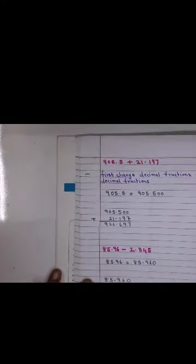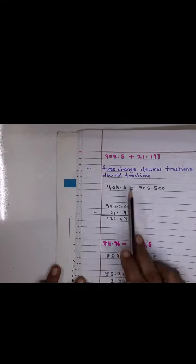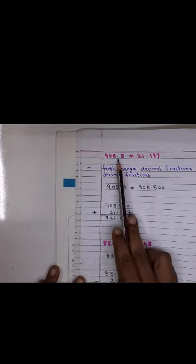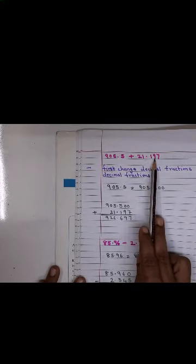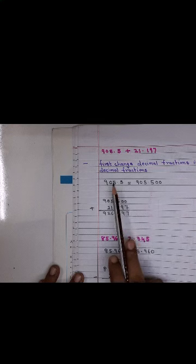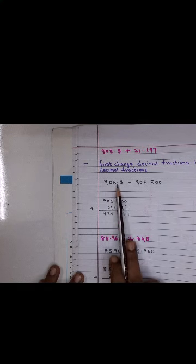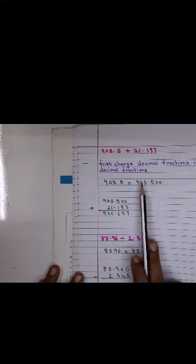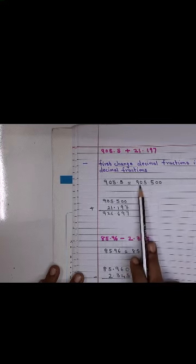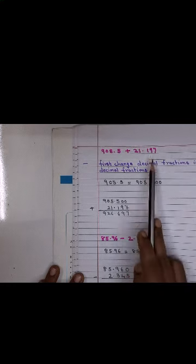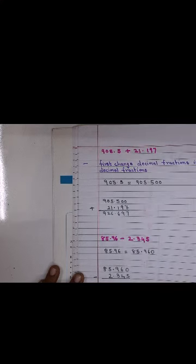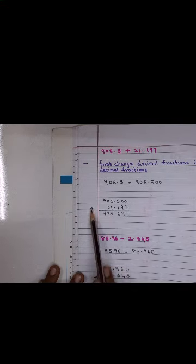Children, remember when there is a decimal, please remember this: you first change the decimal fraction into like decimal fraction. Now look children, after the point here I have 1 place, here after the point I have 3 places. So first I need to change this. 905.5, you change this, make it into like, so it is 905.500. Why? Because this over here is having 3 digits.